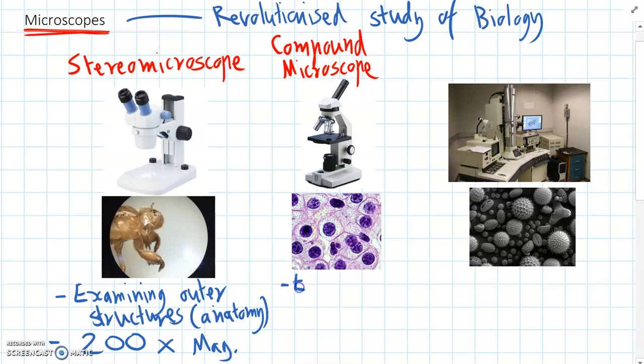So they can examine individual cells. But to do that we need to actually slice a piece of the organism into a really thin slice. So generally the living thing has to be dead and we need to slice it.